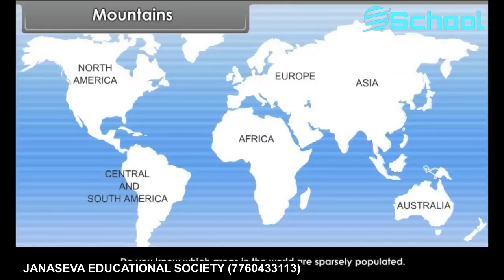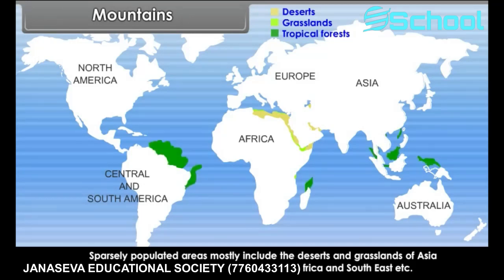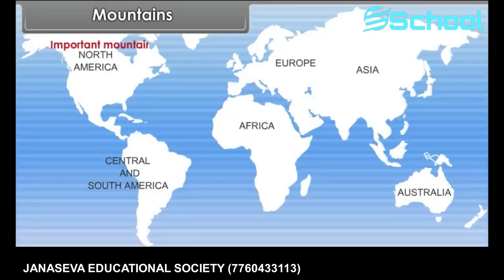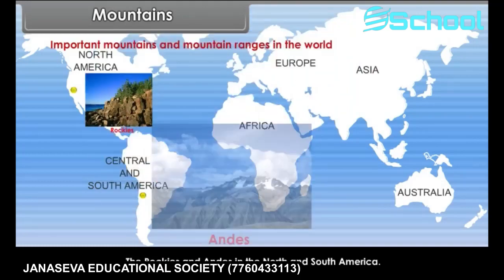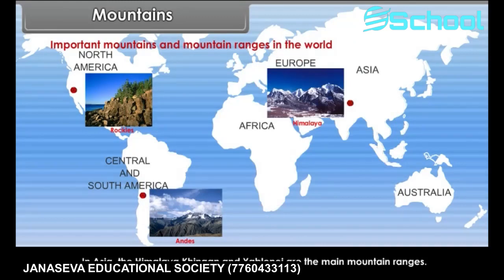Sparsely populated areas mostly include the deserts and grasslands of Asia and Africa, tropical forests of South America, Africa, and South East, etc. Some of the important mountains and mountain ranges in the world are the Rockies and Andes in North and South America. In Asia, the Himalaya, Kingan, and Yablone are the main mountain ranges.